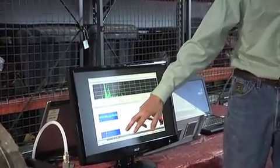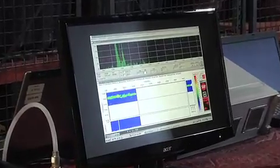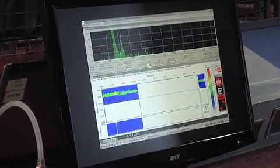This is your B-scan. It's basically, if I took that part, flipped it up like this, and looked crossways into it.